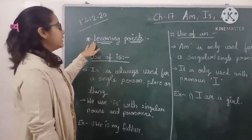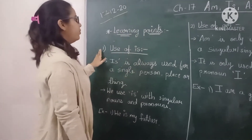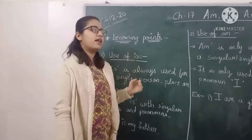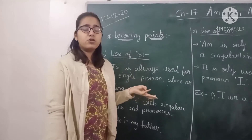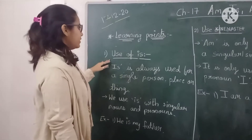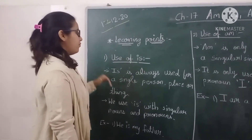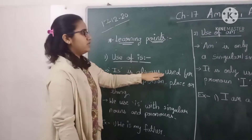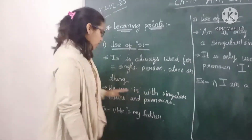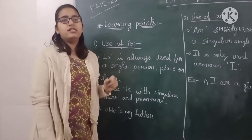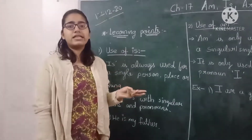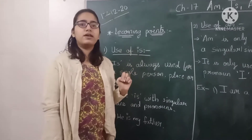First of all, learning points. Number one is the use of 'is'. 'Is' is always used for a single person, place, or thing. When a single person, single thing, or a single animal is referred to — name, place, animal, thing — a noun.